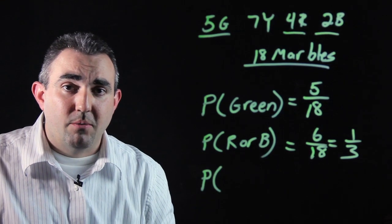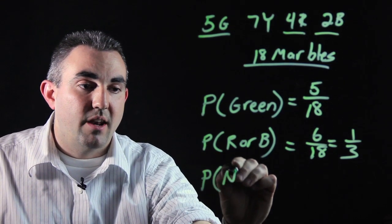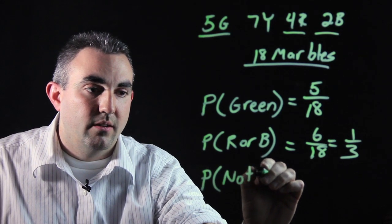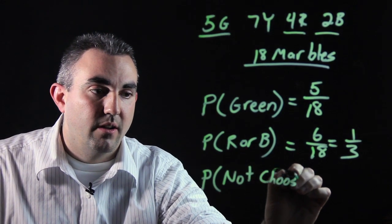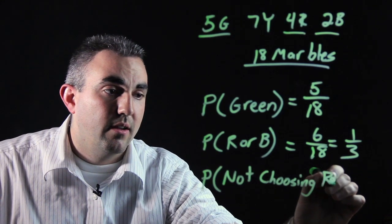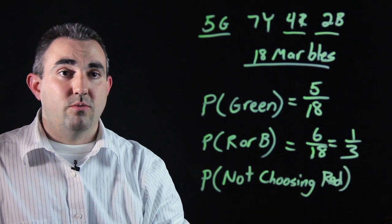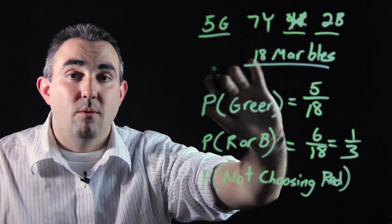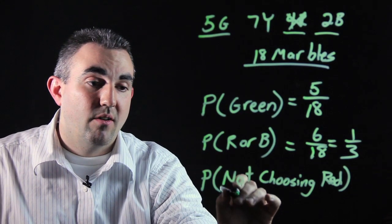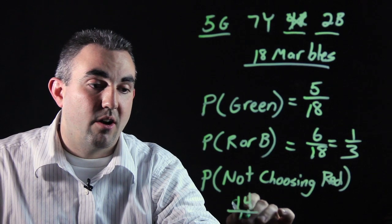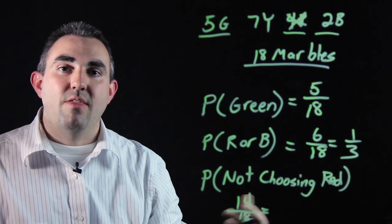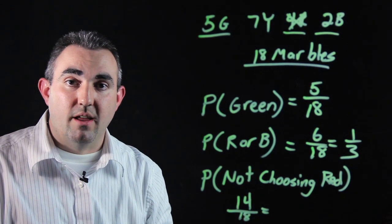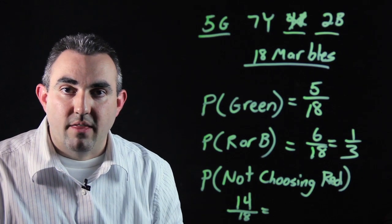Another common probability problem with marbles would be probability of not choosing a specific color. Let's say not choosing red. If we don't want to choose red, we need to remove red from the equation, therefore we're removing four marbles. That means we only have fourteen marbles left out of our eighteen to choose from, and that can be turned into a decimal or a percent. I'm Tom Ruiz. You do the math.